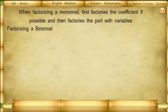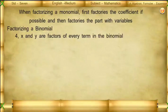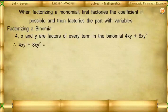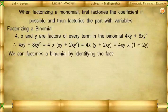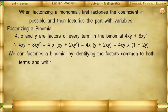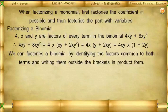Factorizing a binomial: 4, x, and y are factors of every term in the binomial 4xy + 8xy². Therefore, 4xy + 8xy² = 4(xy + 2xy²) = 4x(y + 2xy) = 4xy(1 + 2y). We can factorize a binomial by identifying factors common to both terms, writing them outside the brackets in product form.